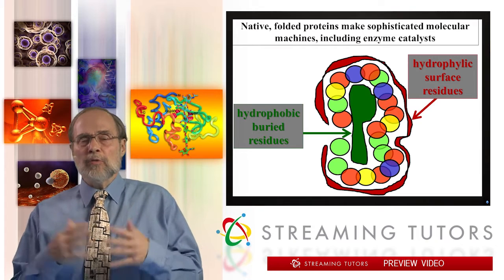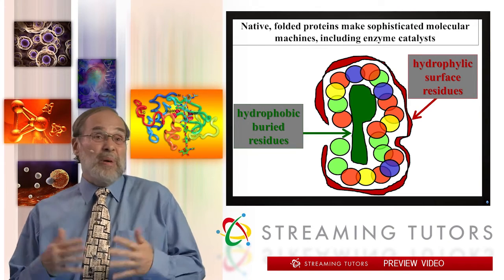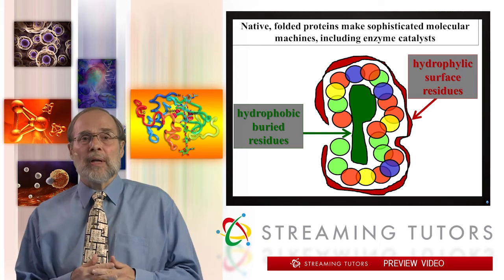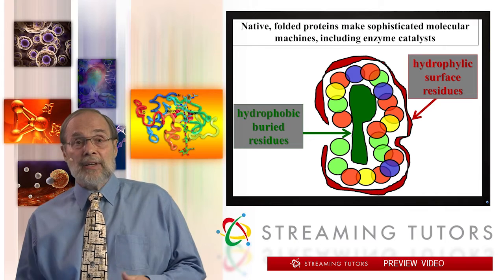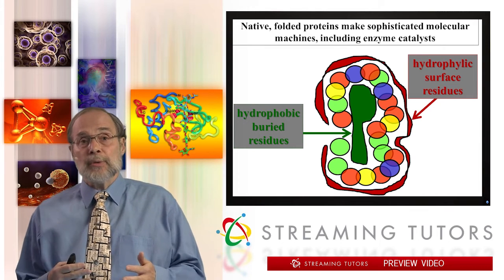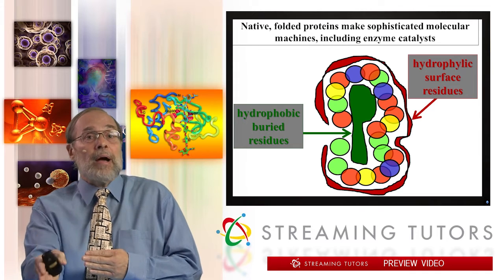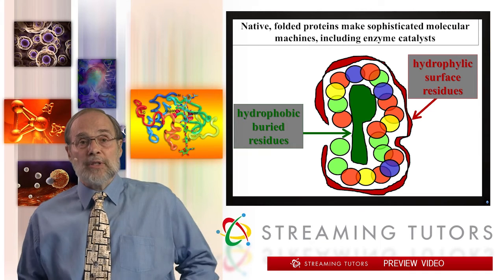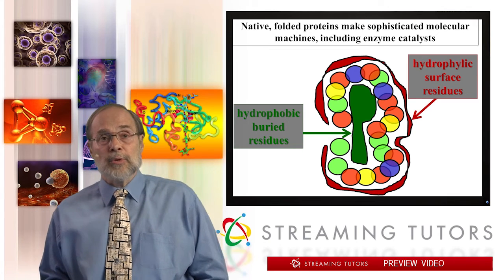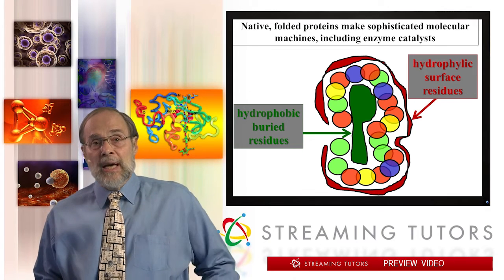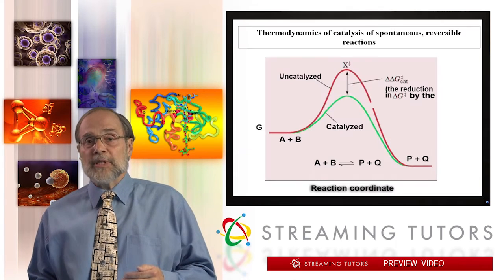Essentially all functions that go on in your body or in any organism — all of biochemistry, almost all — is catalyzed by protein molecular machines that act as agents to control the rates of reactions, so that desirable reactions go at extremely rapid rates and undesirable reactions are so slow as to make generally negligible contribution to the functioning of biochemical systems. Enzymes and protein machines do that in very specific ways.